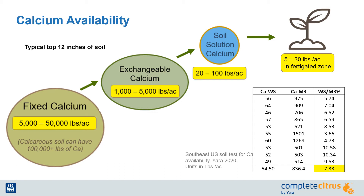Next is soil solution calcium. Like all nutrients, calcium must be in solution for plant uptake. There is about 20 to 100 pounds per acre. So now the concentration of calcium is even lower than originally identified, but not as low as what is around the fertigation zone. The calcium available in the fertigated zone is somewhere between 5 and 30 pounds per acre — not very much at all, especially while trying to set a large crop.